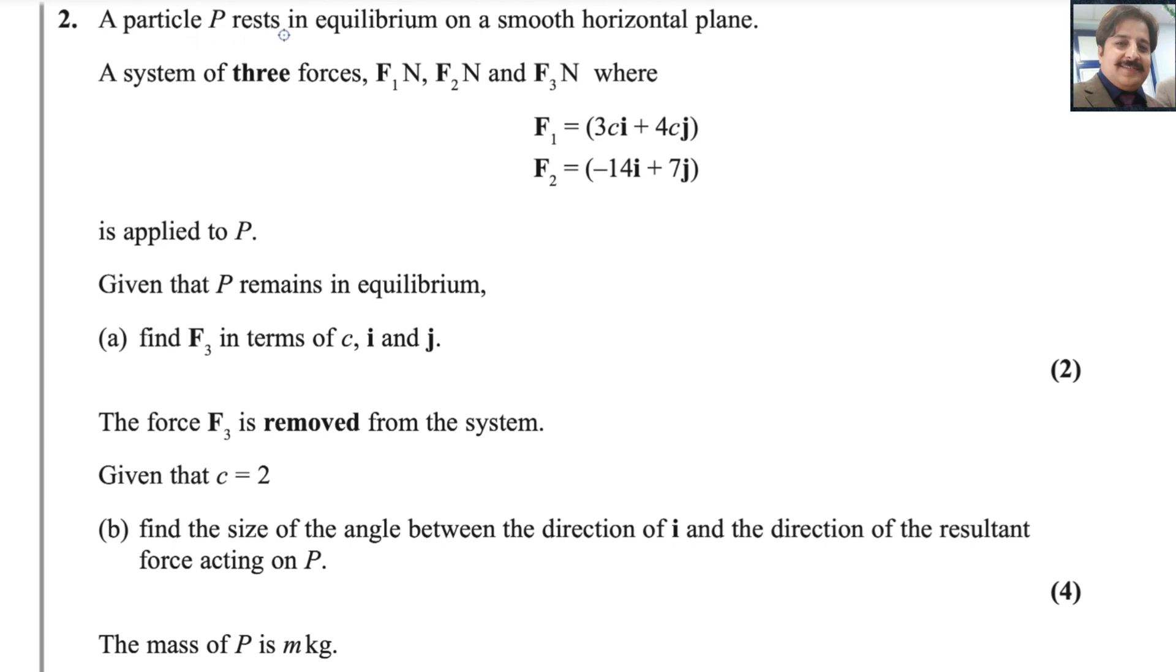A particle P rests in equilibrium on a smooth horizontal plane. A system of three forces F1N, F2N and F3N where F1 equals 3ci plus 4cj, F2 equals minus 14i plus 7j is applied to P. Given that P remains in equilibrium, find F3 in terms of c, i and j.